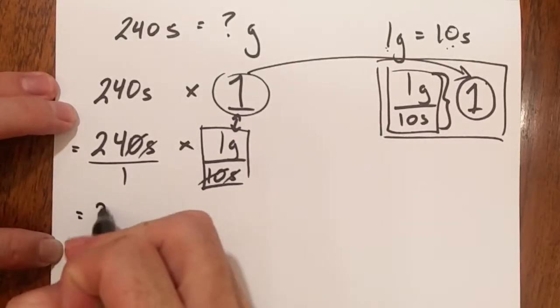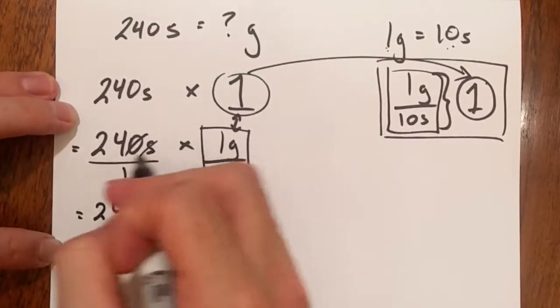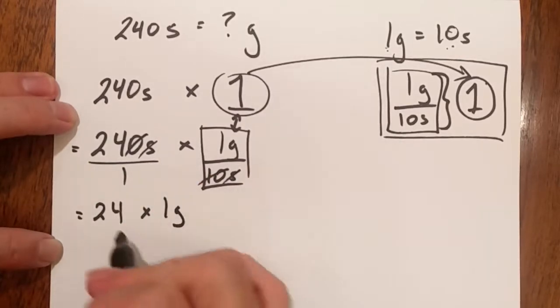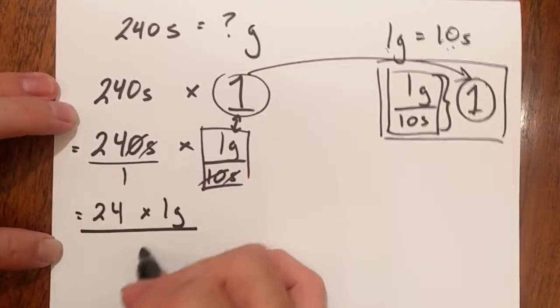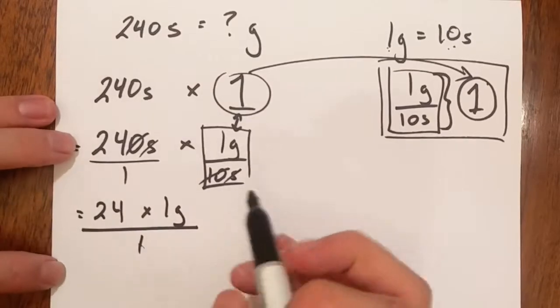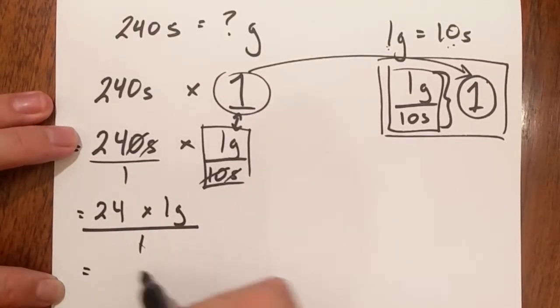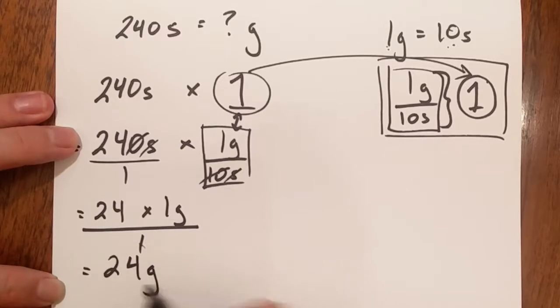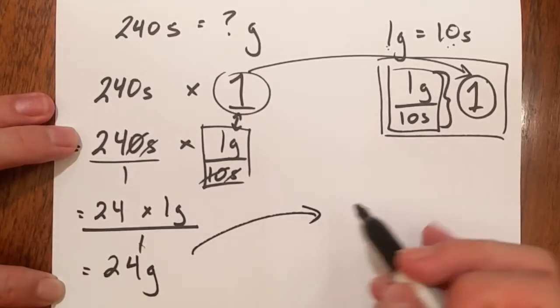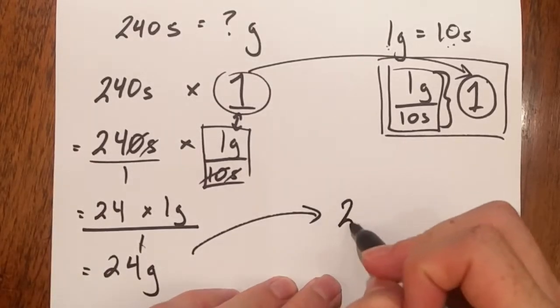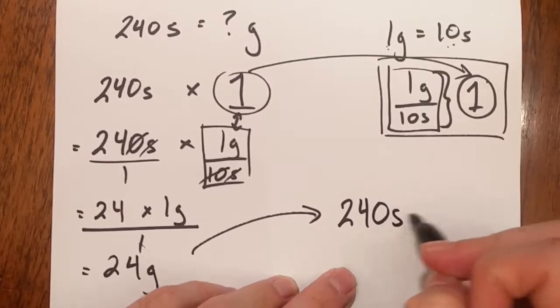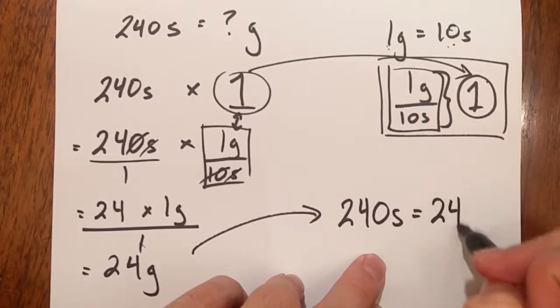What we do is rewrite: I have 24 times one gold and that's all over one. Now if I have one gold 24 times how much gold do I have? That's right I have 24 gold. Okay therefore I can make my final statement that 240 silver is equivalent to 24 gold.